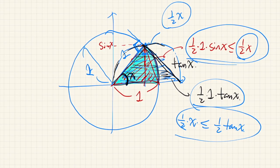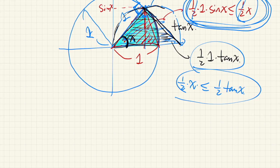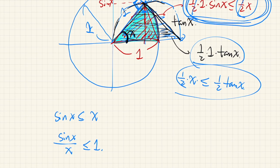Let's rearrange this one. We can cancel this 1 half, so that means sin x is less than or equal to x. If we divide both sides by x, we have sin x over x is less than or equal to 1.